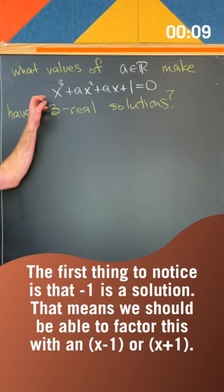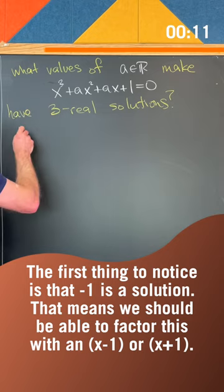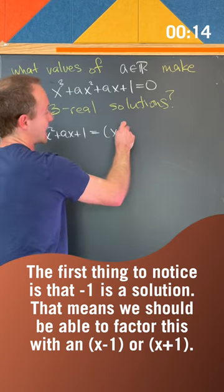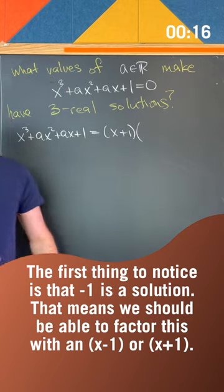The first thing to notice is that -1 is a solution. That means we should be able to factor this with an (x - (-1)) or an (x + 1).